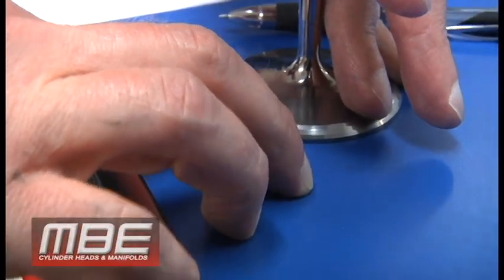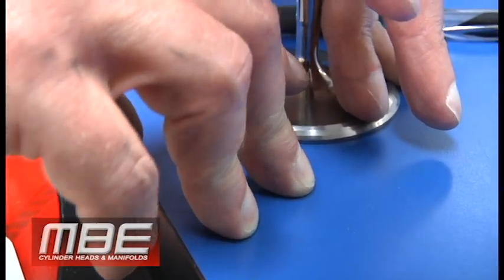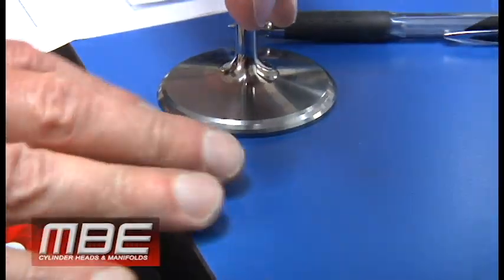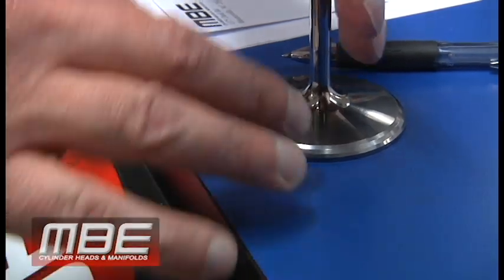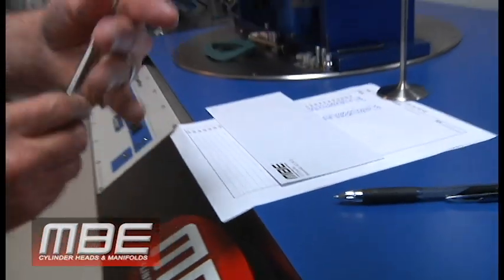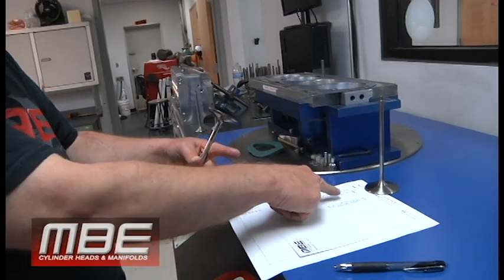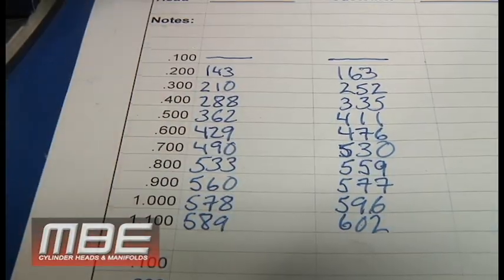When the valve opens, we still want to keep the air attached to the valve as much as we can. That's why these flow numbers go up, because this valve creates turbulence, especially down low—it's horrific.